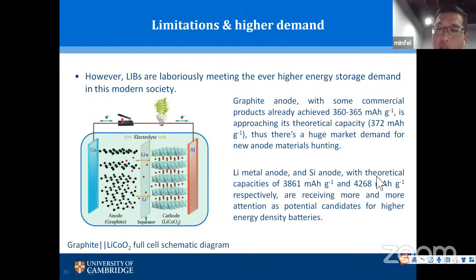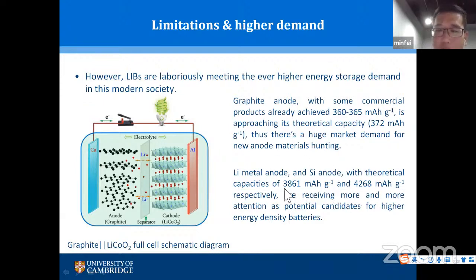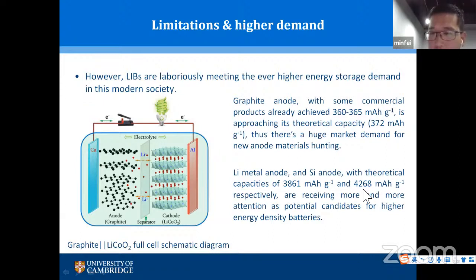Lithium metal anode and silicon anode both have much higher theoretical capacities compared to graphite — roughly 10 times higher. Lithium metal anode has a theoretical capacity of 3800 mAh/g, while silicon anode has a slightly higher theoretical capacity. Due to their higher capacity, they are receiving more and more attention as potential candidates to replace the graphite anode.